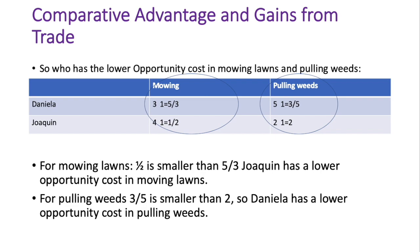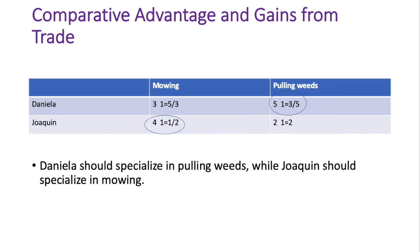Mathematically, you can only have the comparative advantage in one good — you cannot have it in both. That is different from absolute advantage, where you can have the absolute advantage in both goods. Whoever has the lower opportunity cost should specialize in that good, so Joaquin specializes in mowing lawns and Daniela specializes in pulling weeds.